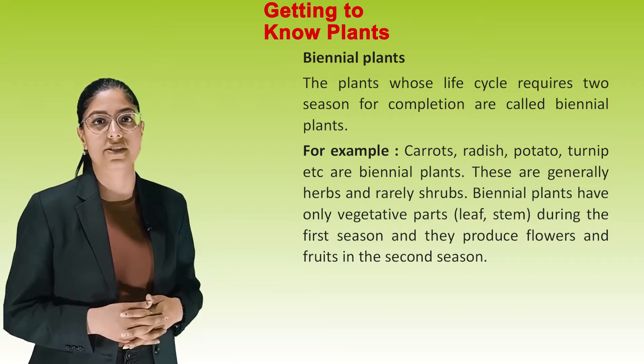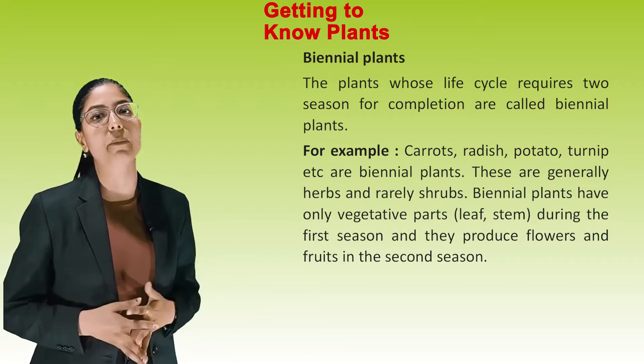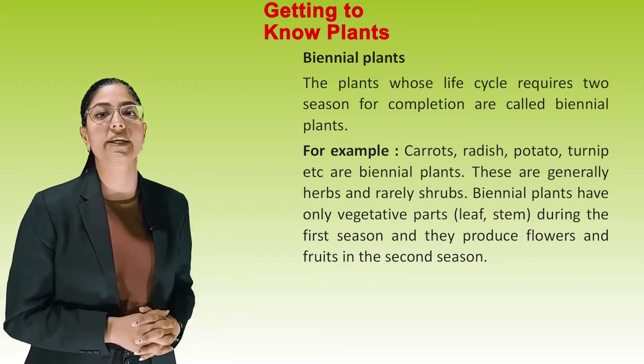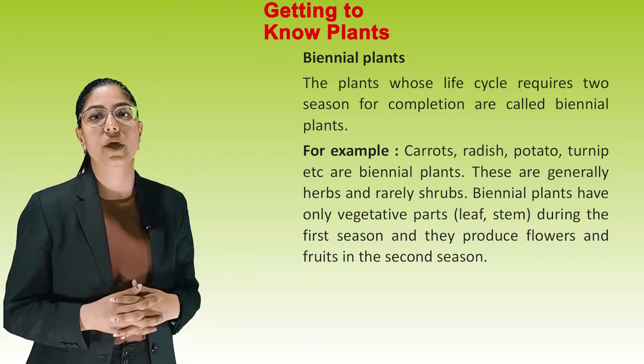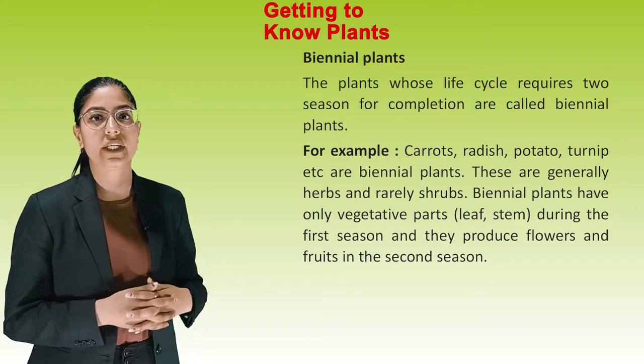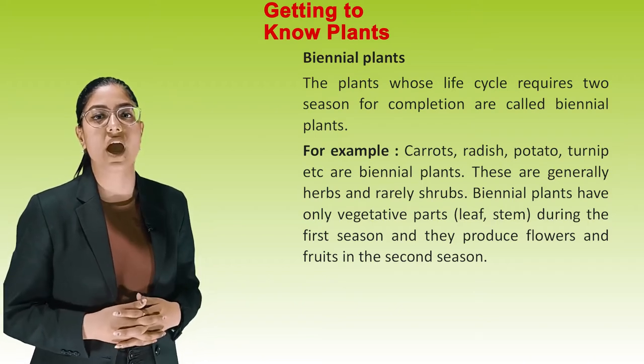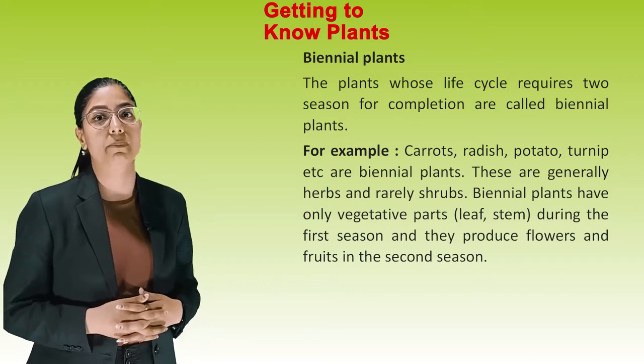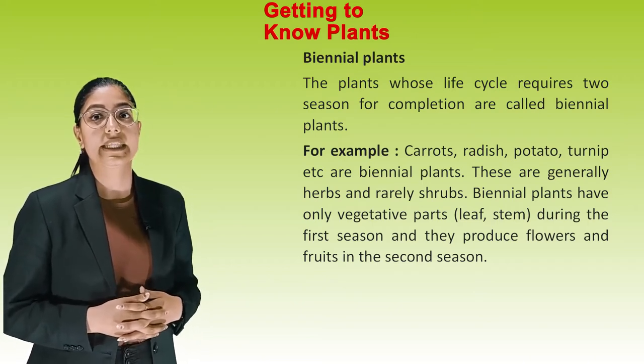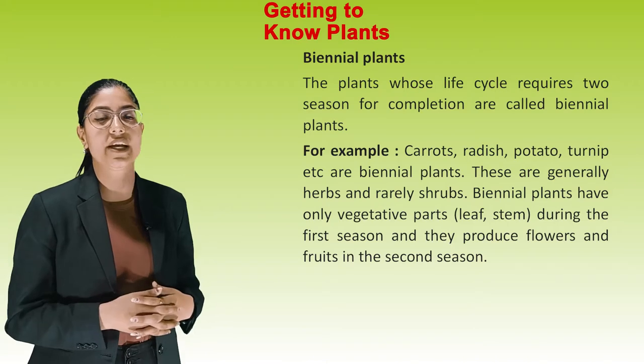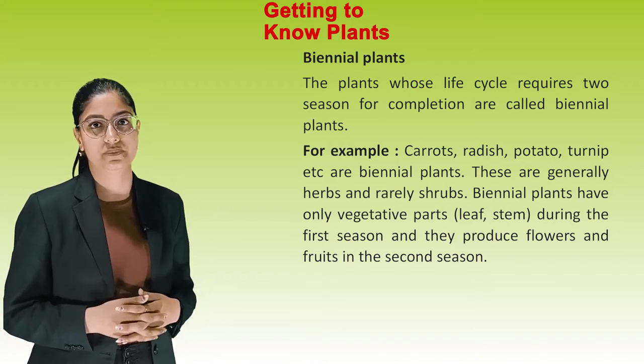Biennial Plants — plants whose whole life cycle requires two seasons for completion are called Biennial Plants. For example, Carrot, Radish, Potato, Turnip etc. are Biennial Plants. These are generally herbs and rarely shrubs.